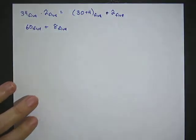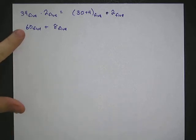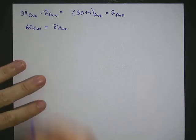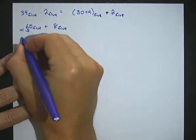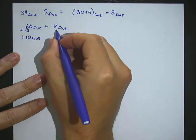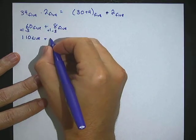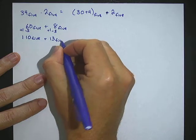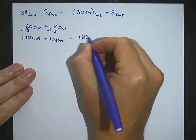We're in base 5, so those two numbers won't work — we need to convert them. For the 60, you can only have digits as large as 4 in base 5, so we subtract 5 from this digit and add 1 to the next digit over. That gives us 110 base 5. For the 8, we do the same thing: subtract 5 and add 1 to the digit to the left, giving us 13 base 5. Adding those two together, we get 123 base 5.